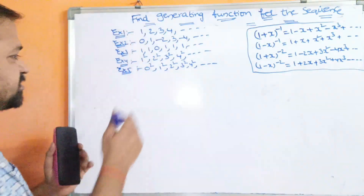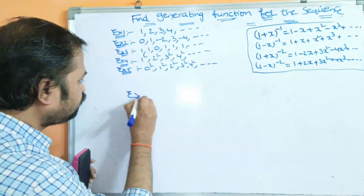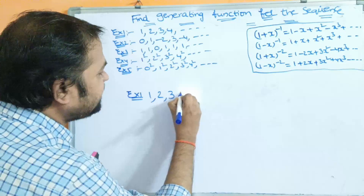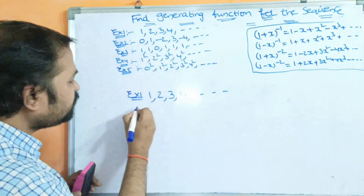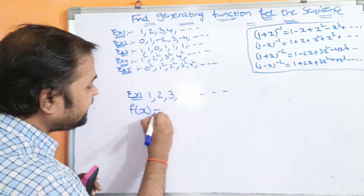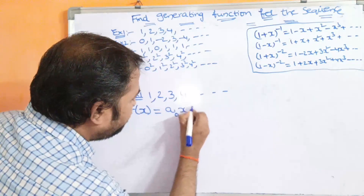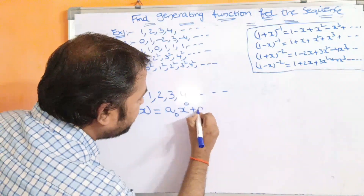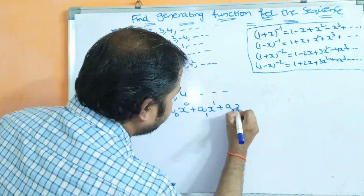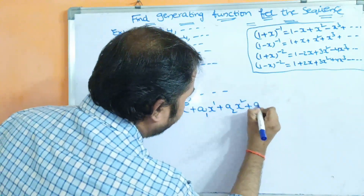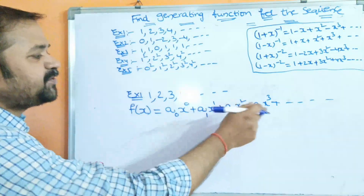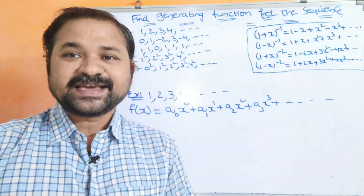Let us solve the first problem. The first example is the sequence 1, 2, 3, 4 and so on. To find the generating function, we use the formula: f(x) = a₀x⁰ + a₁x¹ + a₂x² + a₃x³ + ... where a₀, a₁, a₂, a₃ are the terms of the given sequence.